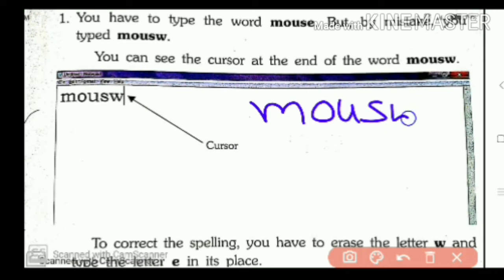But instead of E, by mistake, we had typed W. And the cursor is here now, you see. This line, that is cursor. To correct the spelling, you have to erase the letter W. We want to erase W and type the letter E in its place. We want to rub this and there we want to write E. Then it will be the correct spelling.